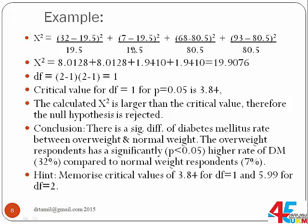Since the difference is the same and the expected value is the same for another cell, we get 8.0128 twice. For the next cell, it is again 12.5 squared, then divided by 80.6, giving 1.94. Adding all these values together gives a total chi-square of 19.9076. Since 19.9076 is much larger than 3.84, we already know the result is significant and the null hypothesis is rejected.